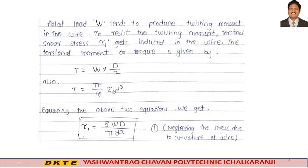Equating the above two equations — W into D/2 equals pi by 16 into tau1 into d cube — we get tau1 equals 8WD divided by pi d cube. This is equation number 1.